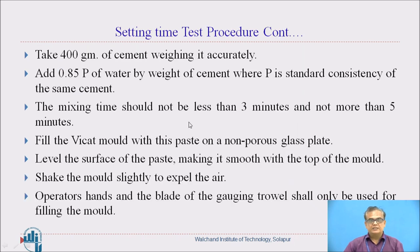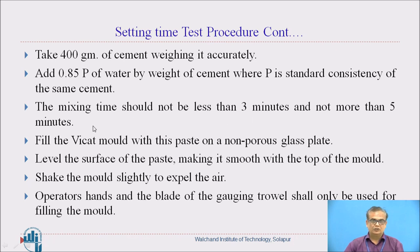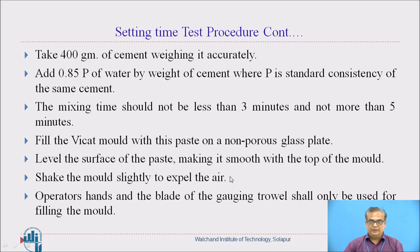Let us see the step-by-step procedure. The first step is taking 400 grams of cement, weighed accurately on a balance. Then, addition of 0.85P of water by weight of cement, where P is the standard consistency of the cement paste. The mixing time should not be less than 3 minutes and not more than 5 minutes — so mixing time is fixed. This mixture is filled in the Vicat mould, which is kept on a non-porous glass plate. The mould is shaken to expel any air so that the cement paste will be voidless; a trowel should be used for gauging the cement.